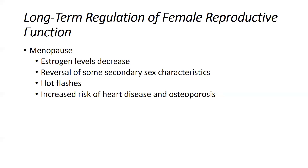Beyond reproductive years, as women move into menopause, estrogen levels decrease, and post-menopausal women face increased risk for heart disease and osteoporosis. Before menopause, women are less likely to have heart attacks than men, but after menopause those risks equalize. Menopause also brings reversal of some secondary sex characteristics, changes to the vagina, uterus, and ovaries, hot flashes, and increased risks for osteoporosis and heart disease.